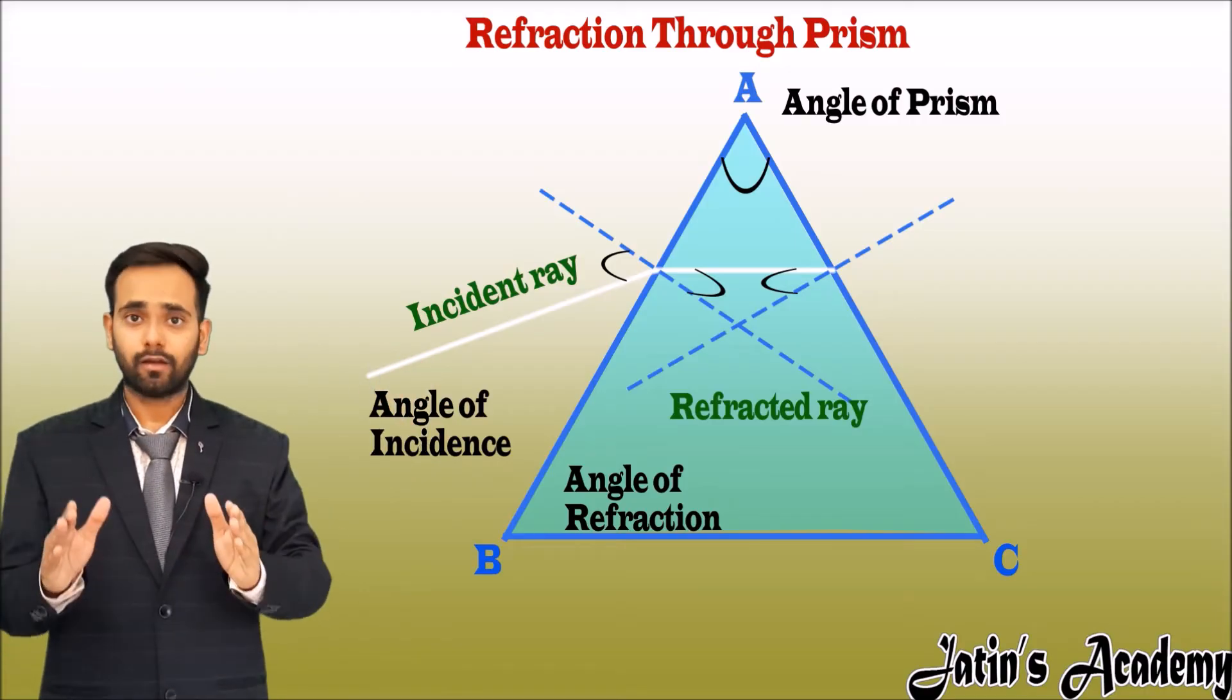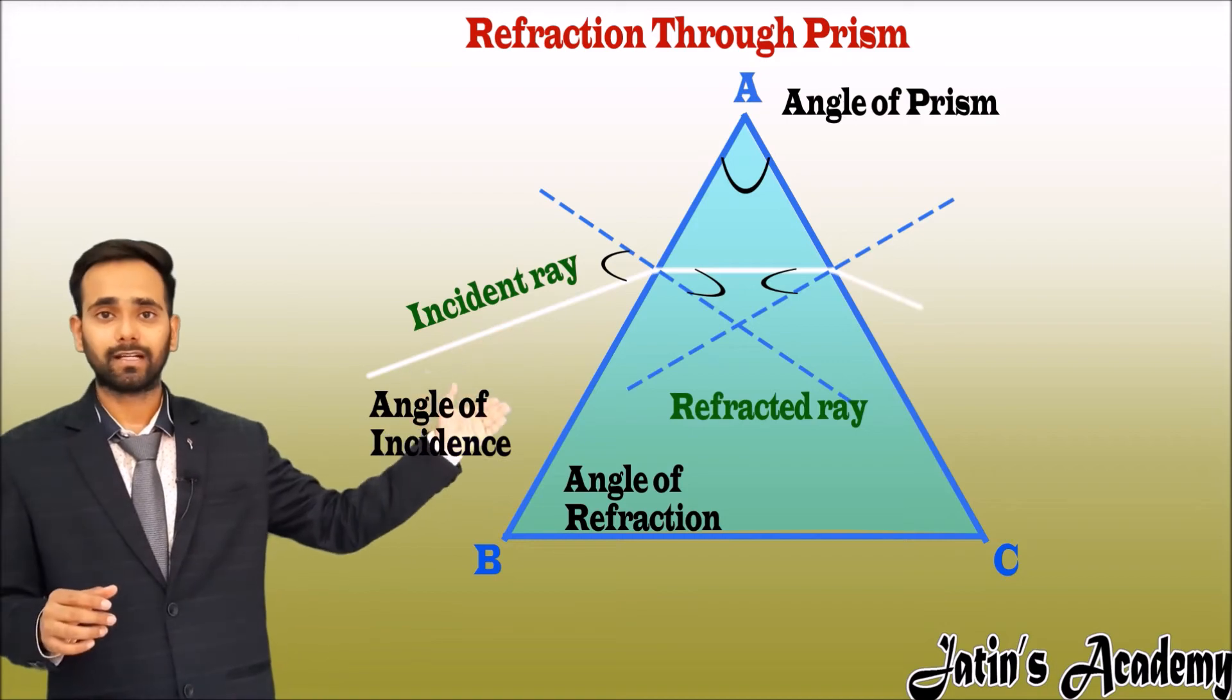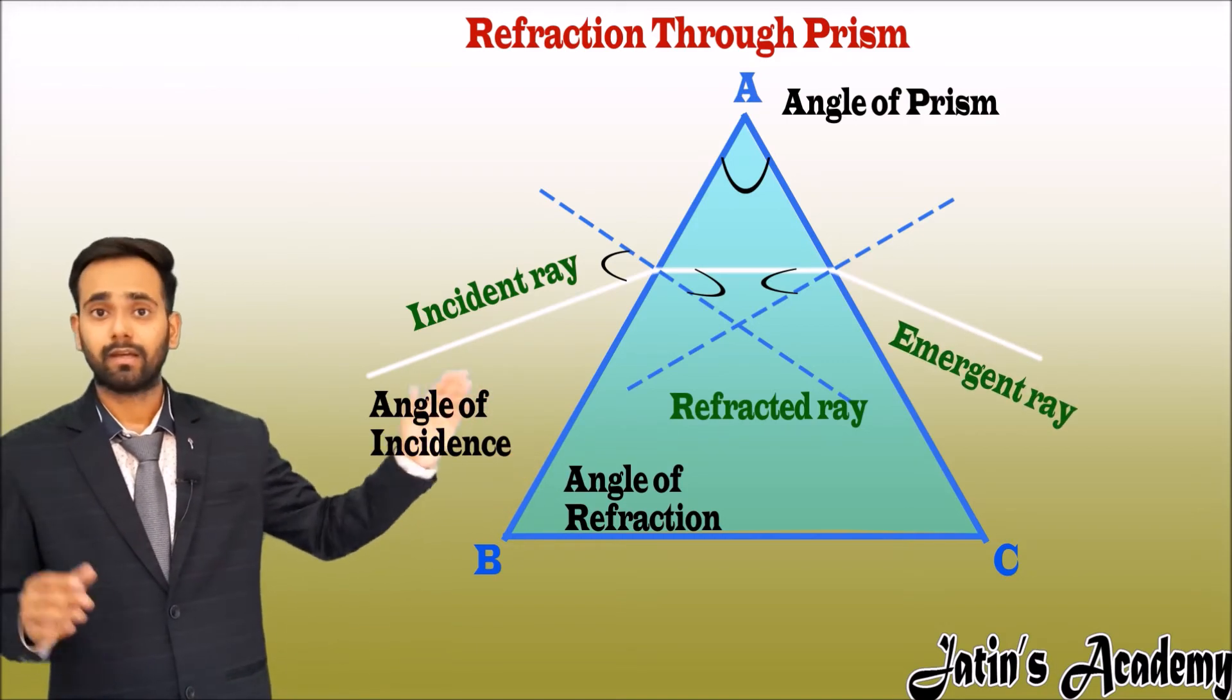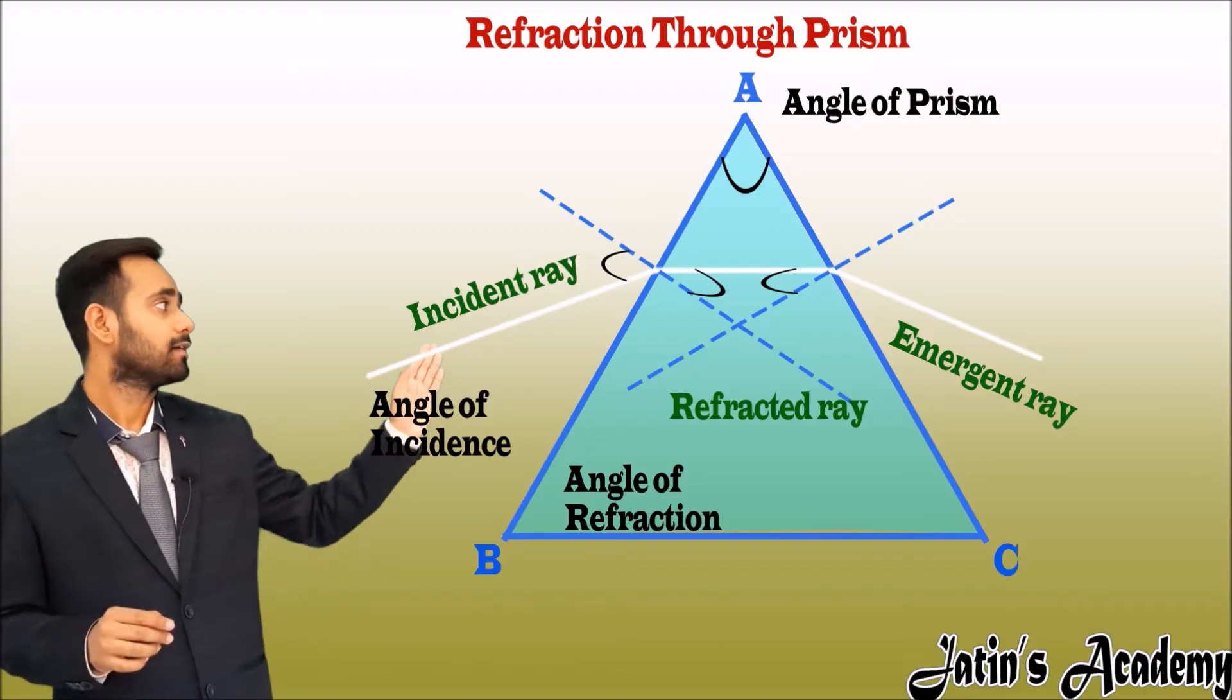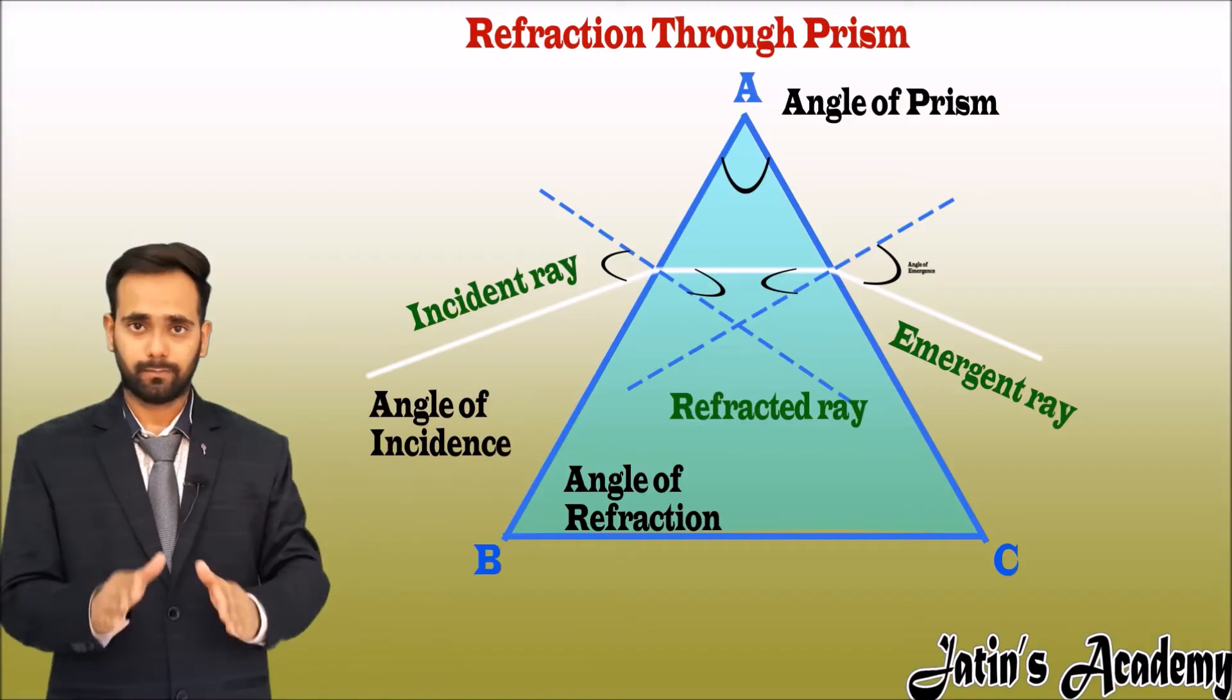Now this ray wants to go straight but due to change in the medium, it is bending away from the normal and this ray become emergent ray. The angle between the normal and emergent ray is nothing but the angle of emergence.